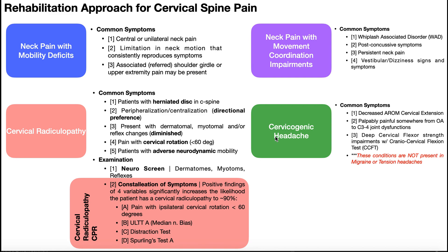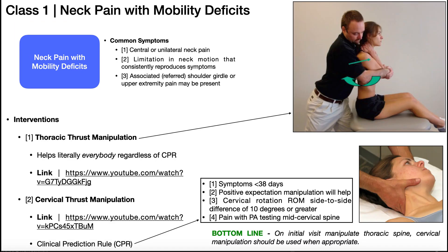In the next four videos, we're going to be going through each one of these classifications. We'll start with neck pain with mobility deficits, which is pretty common and probably one of the easier ones to identify. Common symptoms include central or unilateral neck pain, and a limitation in neck motion that consistently reproduces their symptoms — maybe limited rotation in one direction, limited side bending, or limited extension. Every time you perform that particular limited movement, it reproduces their pain.